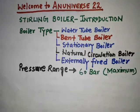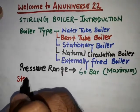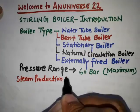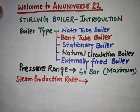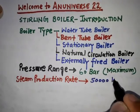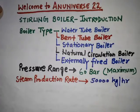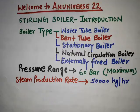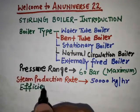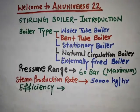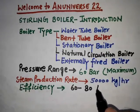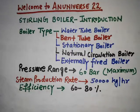The steam production rate in the Sterling boiler is about 50,000 kg per hour. This is the steam production capacity of the Sterling boiler. The efficiency of the Sterling boiler normally lies between 60 to 80 percent.